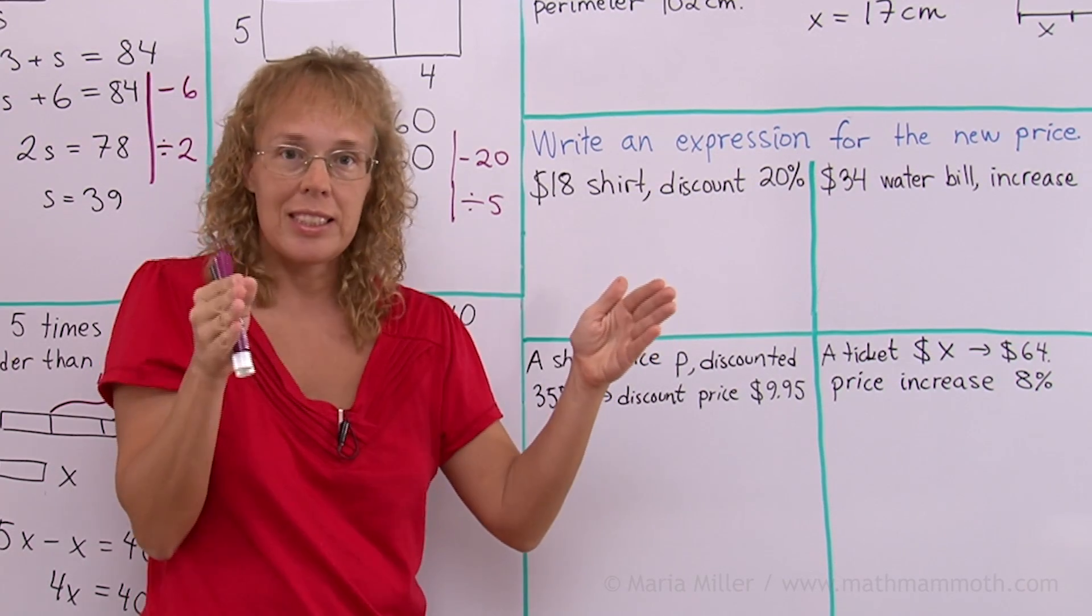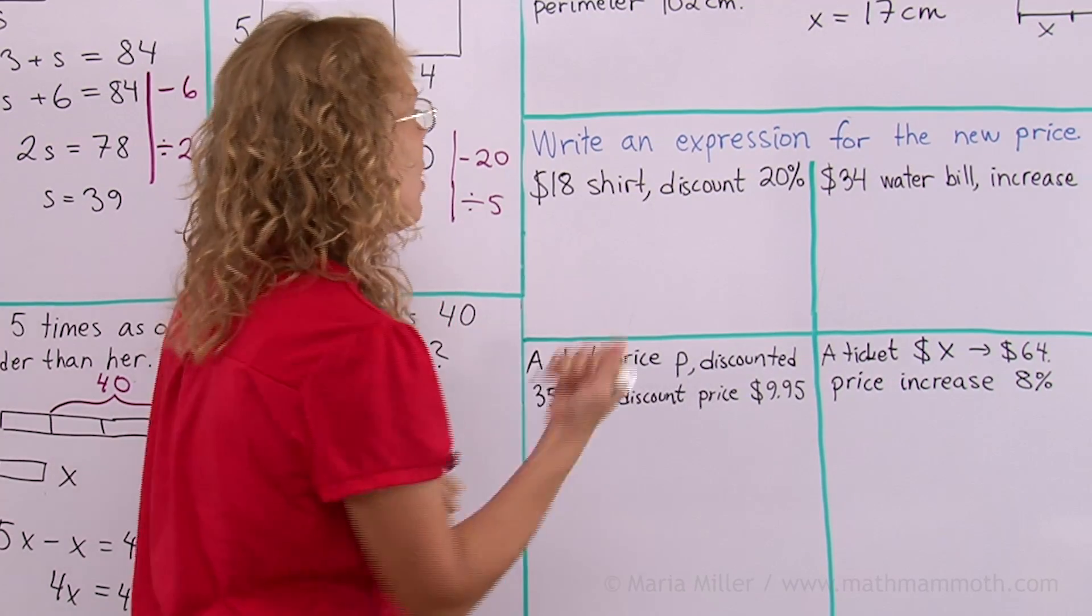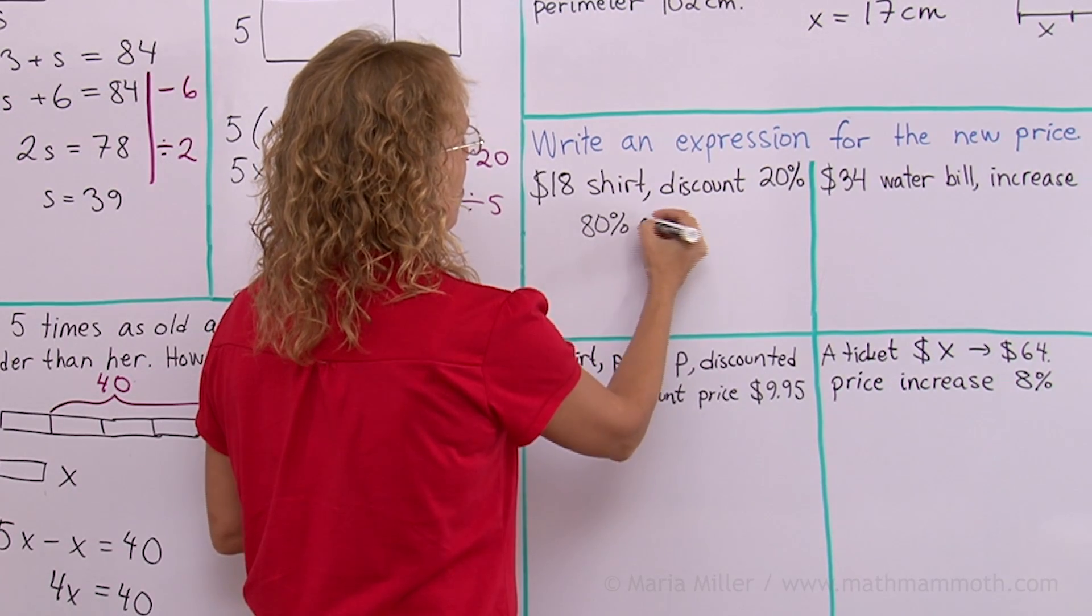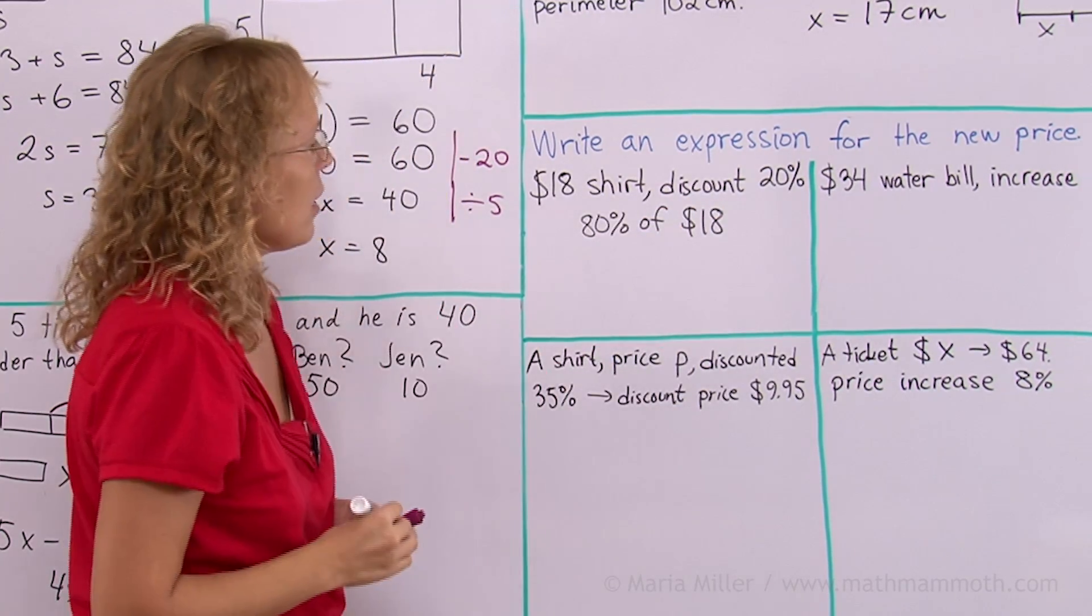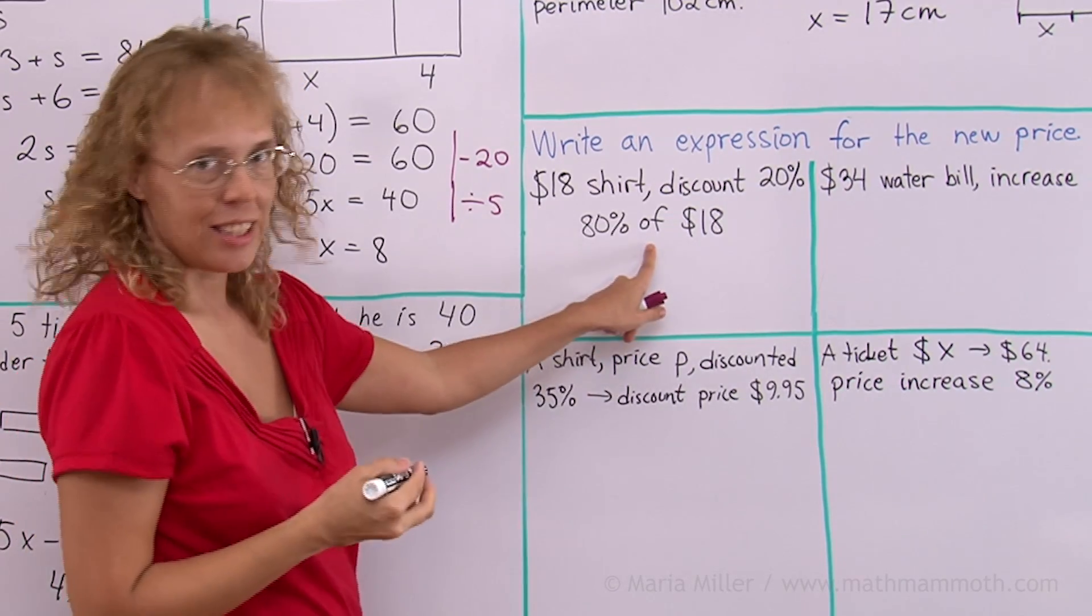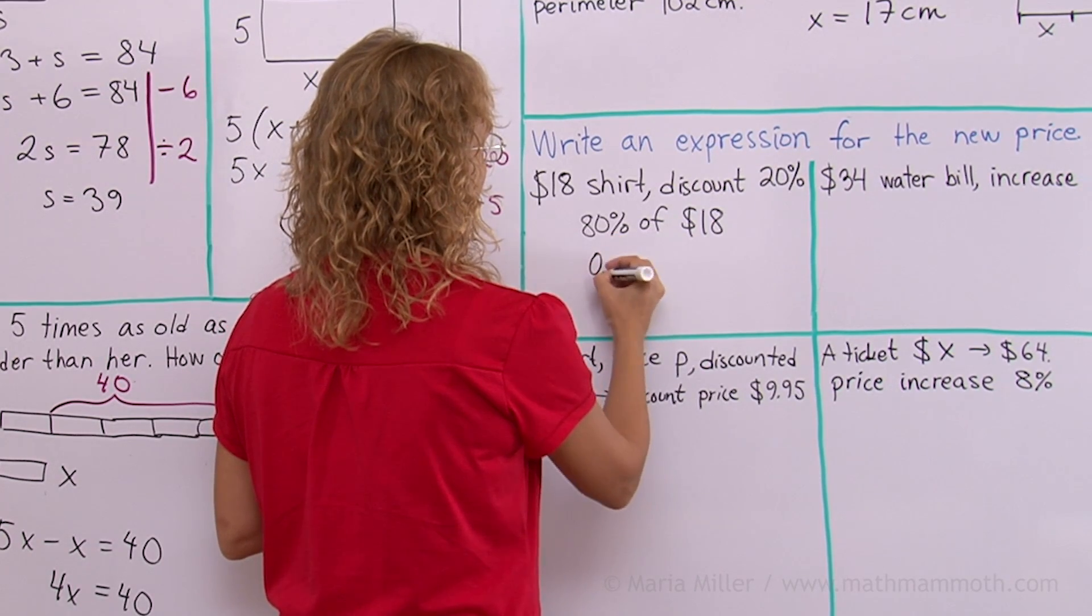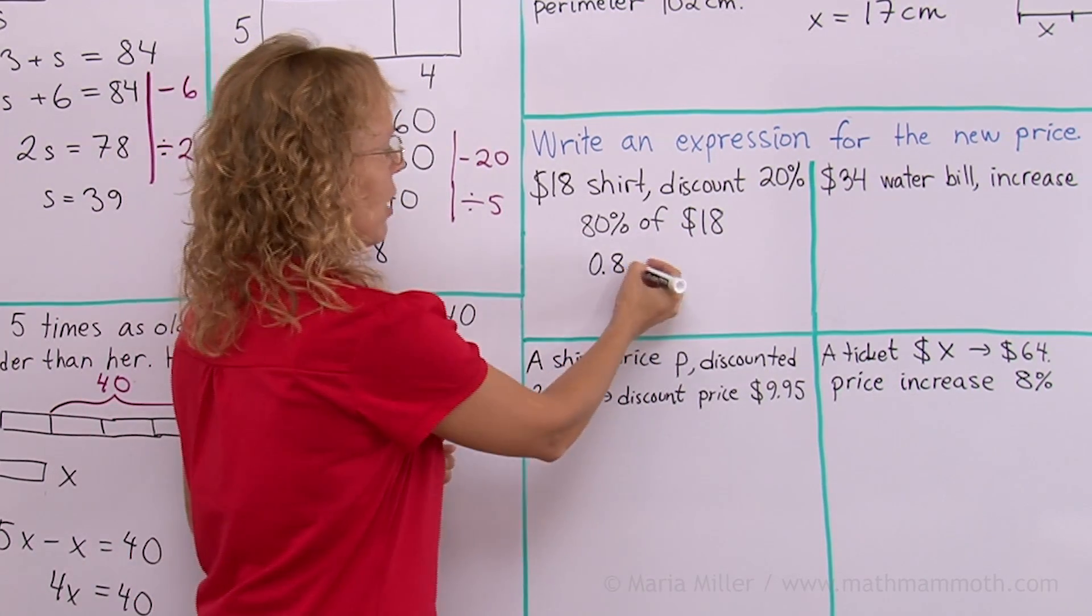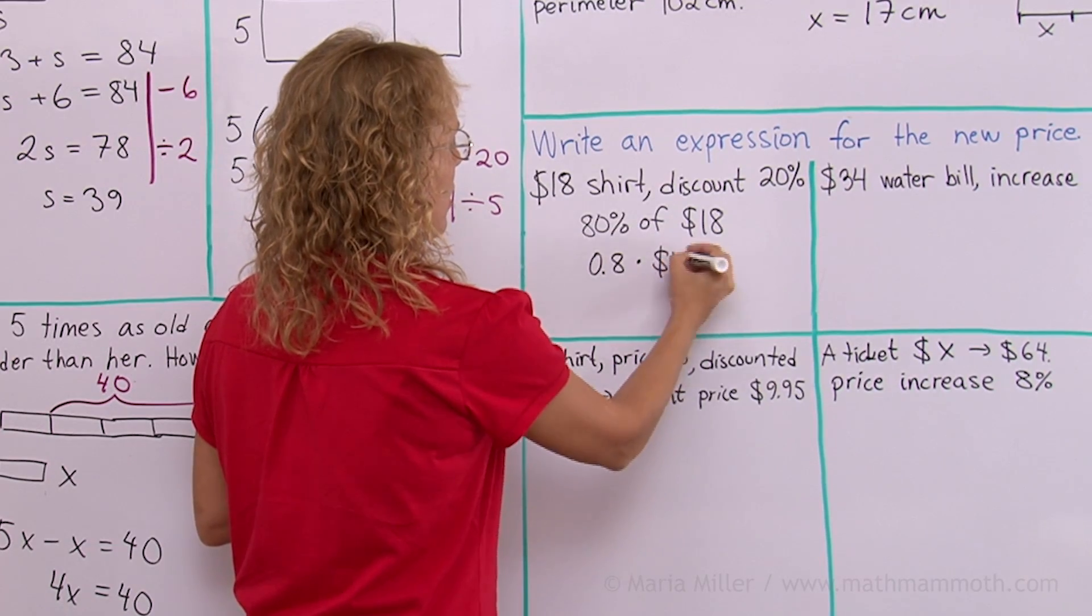Now you take away 20% of the price, so how many percent of the price is left? Right, 80%. So our expression for the new price is 80%, one possible expression, 80% of 18. Now I want to write the 80% as a decimal and of translates into multiplication. Remember that.